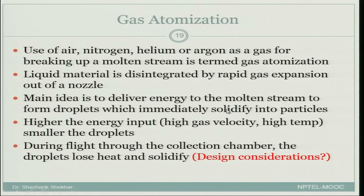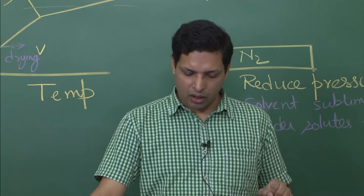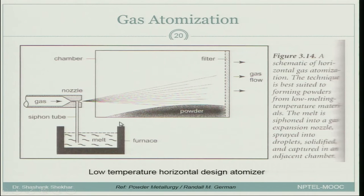You can imagine that each droplet has some surface area related to energy, so if you want smaller droplets, a larger amount of surface area will be generated and therefore larger energy must be invested. During the flight through the collection chamber the droplets lose heat and solidify. This should give you a hint about design considerations: you want the powder particulates to solidify before reaching the collection zone, so the length should be large enough that they lose heat before getting there, but not so short that the droplets have not yet become spherical or of uniform size.